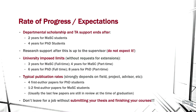Graduation typically takes about two years for master's students and four years for PhD students. You are guaranteed financial support for two years as a master's student and four years as a PhD student — that's the minimum stipend I described. After that, if you haven't finished, you can continue but financial support is no longer guaranteed. You could be paying tuition and living expenses yourself. Your supervisor is not obligated to support you after the guaranteed period, though most will continue to support you if you're making good progress.